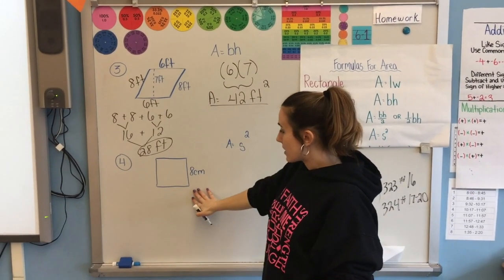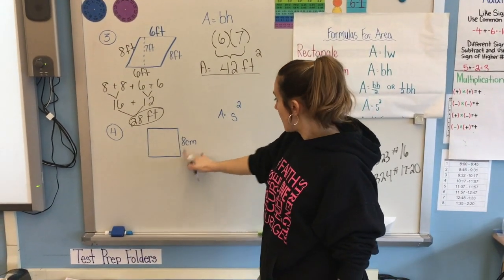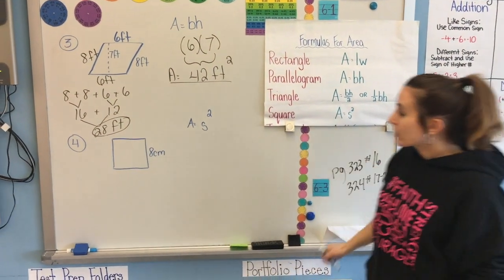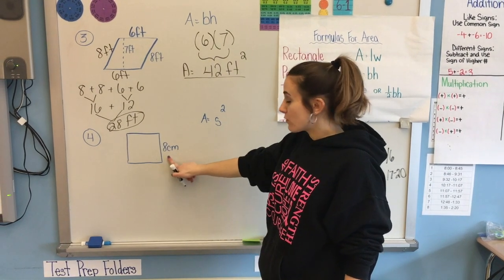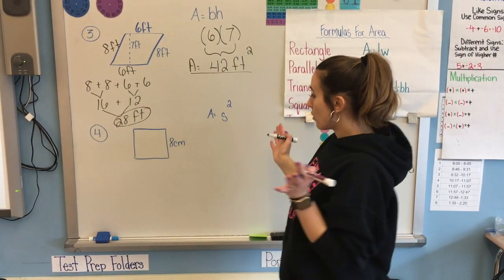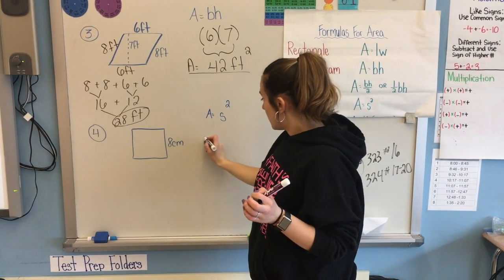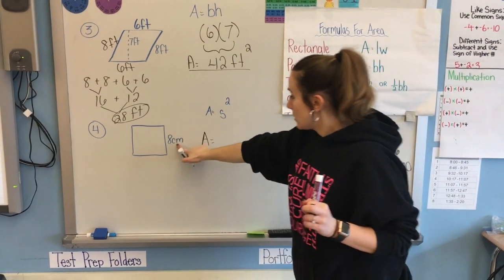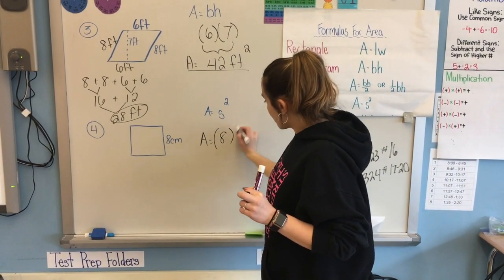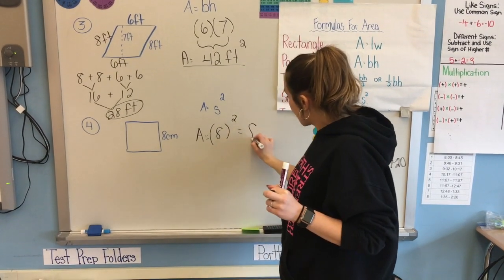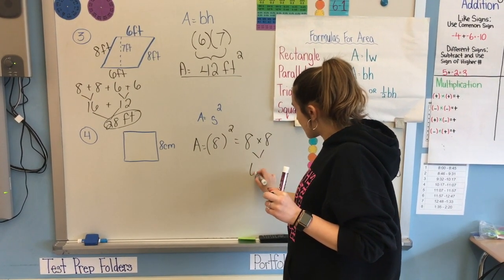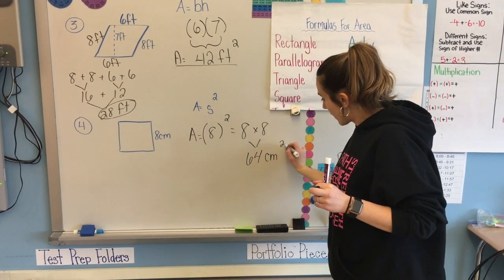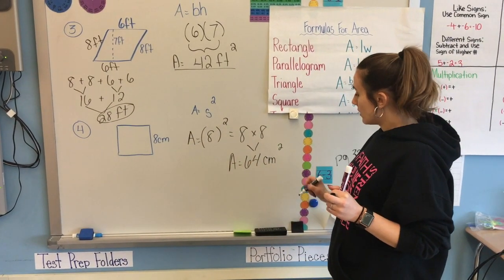And our last shape that we have here is a square. If I look at my square formula, area equals side squared. They only give you one measurement here. If you have one measurement and it looks like a square, you should know right away to plug into your area for square. So it's not just s squared, that means side squared. So your side length is eight, and I'm going to square my eight, which means eight times eight, which equals 64 centimeters squared.